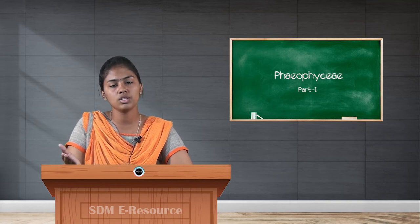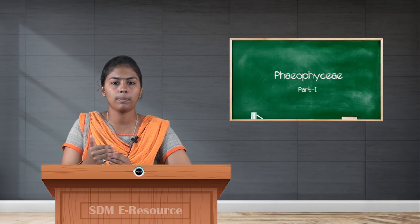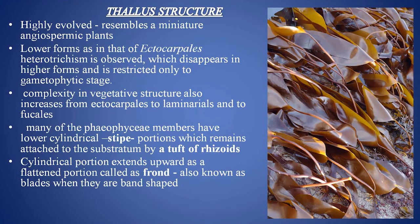If you compare it to an angiospermic plant, you can call it the stem of the plant. Here in Phaeophyceae, the lower cylindrical structure is called the stipe of the thallus.